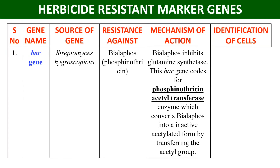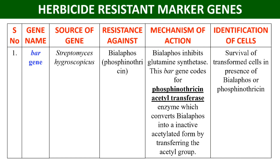That enzyme is phosphinothricin acetyltransferase, which converts the bialaphos herbicide into an inactive acetylated form. When it is inactive, it is not able to kill the cell. For identification, transformed cells survive in the presence of bialaphos or phosphinothricin.